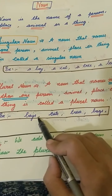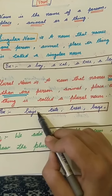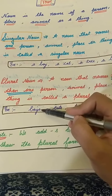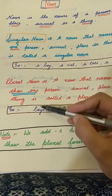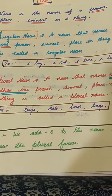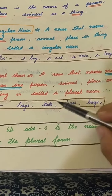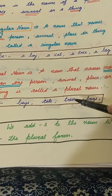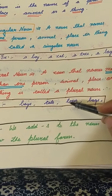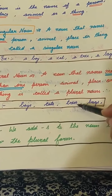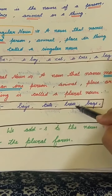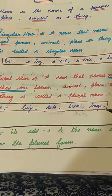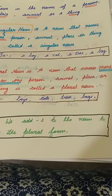For example: boys — B-O-Y-S. Can you see the difference? In 'a boy,' S is not added. In 'boys,' S is added, so it means more than one boy — ek se zyada boy ki baat ho rahi hai — so it is a plural noun. Cats — C-A-T-S — more than one cat. Trees — T-R-E-E-S — more than one tree. Bags — B-A-G-S — more than one bag.